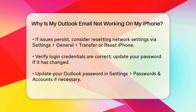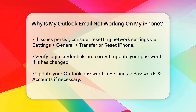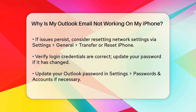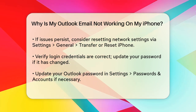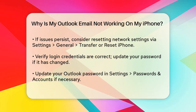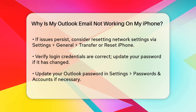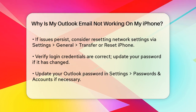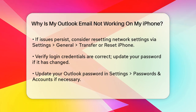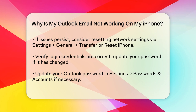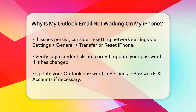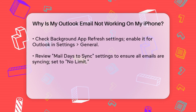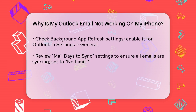Outlook might also stop working due to background app refresh settings. With newer iOS versions, background tasks are limited to save battery life. Ensure that Background App Refresh is enabled for Outlook. Go to Settings, General, Background App Refresh, and toggle on Outlook.